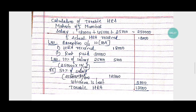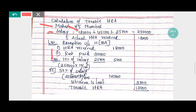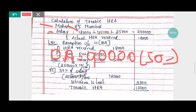Now we calculate the taxable HRA and exempted HRA in the case of Mahesh of Mumbai. The salary taken by Mr. Mahesh is Rs 1,80,000. The dearness allowance received is Rs 90,000. Since only 50% enters into retirement benefits, we are considering only Rs 45,000. Commission received is Rs 25,000. Total salary for the purpose of HRA calculation is Rs 2,50,000.